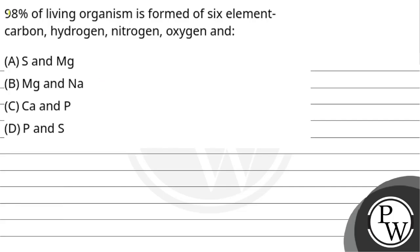Hello, let's see the question. 98% of living organisms is formed of 6 elements: carbon, hydrogen, nitrogen, oxygen and option A, sulfur and magnesium; option B, magnesium and sodium; option C, calcium and phosphorus; and option D, phosphorus and sulfur.